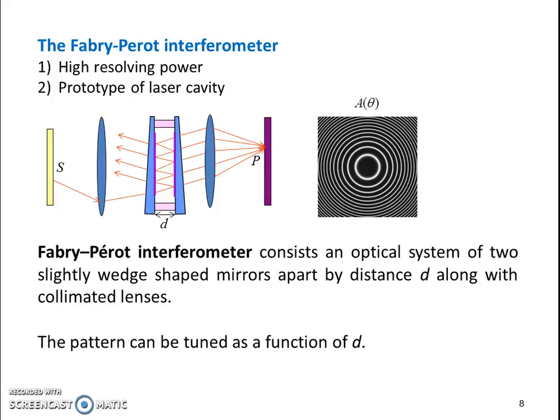This is the schematic of a Fabry-Perot interferometer, which is an optical system consisting of two slightly wedge shaped mirrors apart by distance d along with the collimated system of lenses.